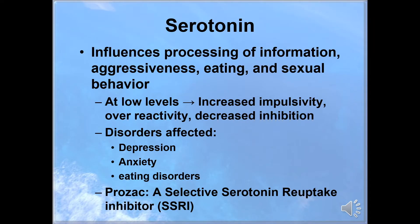There are many different neurotransmitters involved in psychopathology, and we're going to only talk about a handful of them today. Serotonin influences the processing of information, aggressiveness, eating, even sexual behavior. It's involved with anxiety, eating disorders, insomnia, and perhaps it's best known for its role in depression. At low levels, we see increased impulsivity, reactivity, and decreased inhibition. And according to the latest hypothesis, depression is caused by a low level of serotonin in specific parts of the brain.